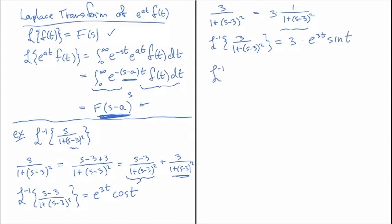So now I can write the full assembled inverse transform. The inverse transform of s over (1 plus (s minus 3) squared) will be equal to e to the three t cosine t plus three e to the three t sine t.